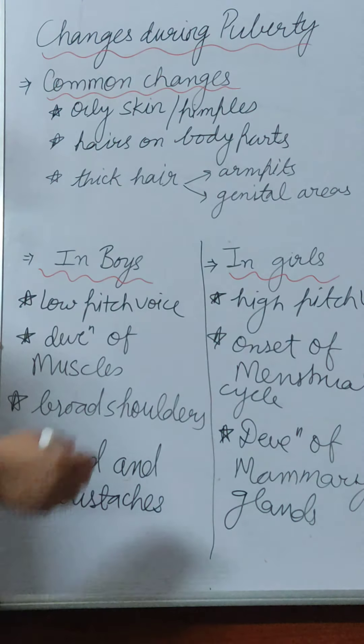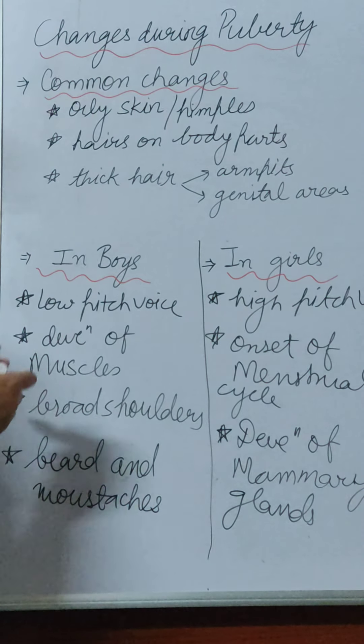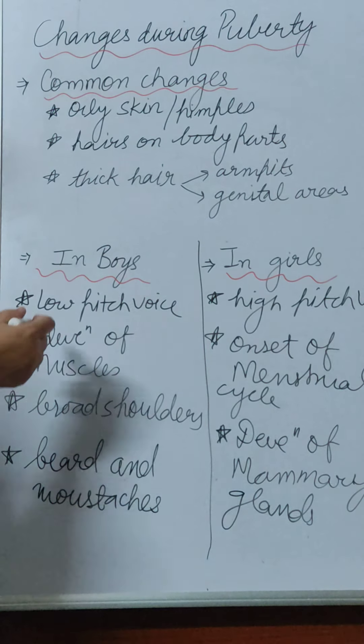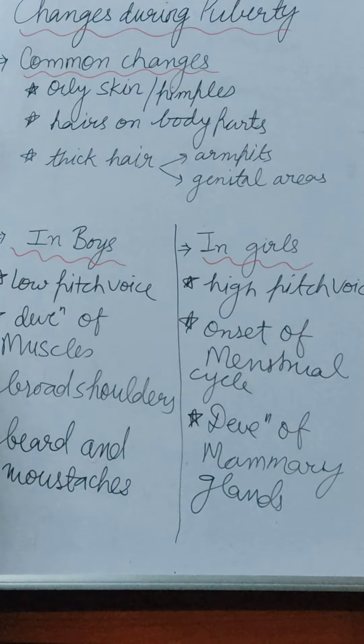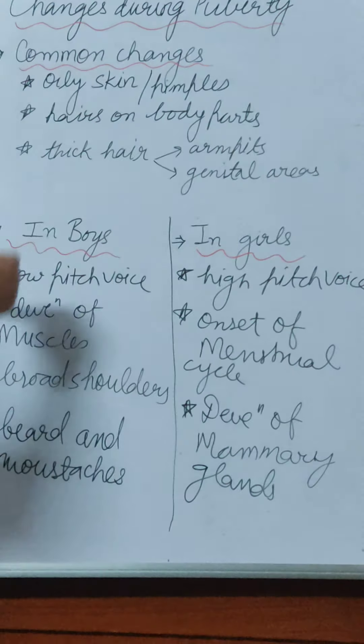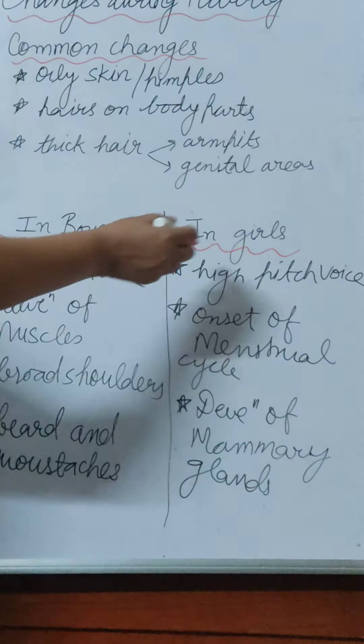Common changes also include thick hair growth in armpits and genital areas. In boys specifically: the voice becomes low-pitched, the body becomes more muscular with broad shoulders, and beard and moustaches develop. In girls, the voice becomes high-pitched, they have the beginning of the menstrual cycle or menses, and they have development of mammary glands or breasts.